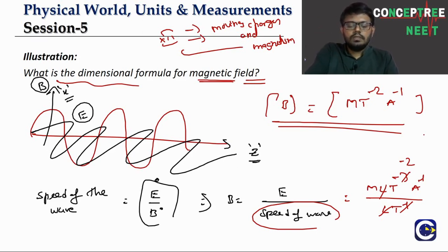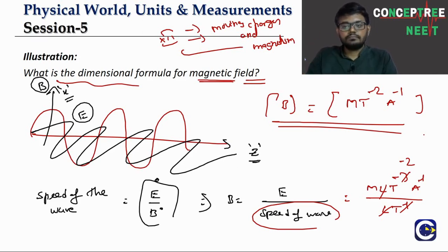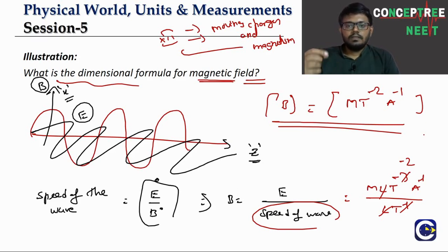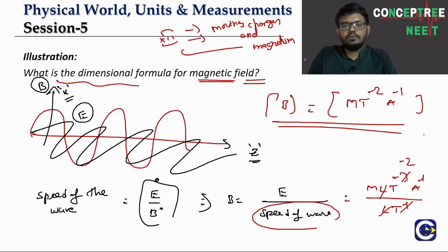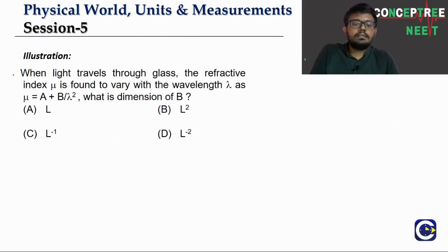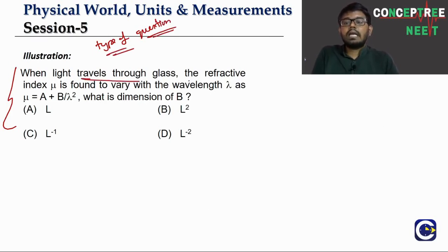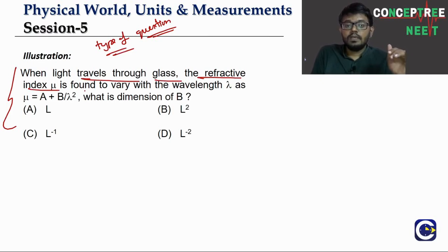We will learn about all these physical quantities as we go through the Plus 1 and Plus 2 syllabus. It is a two-year continuous learning process. The key idea is knowing the procedure — not memorizing all formulas at once. As you study each chapter, you will learn the relevant dimensional formulas.